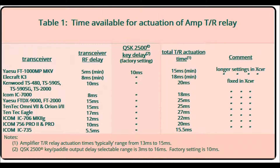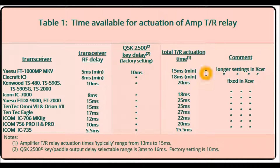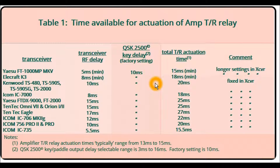The 10 milliseconds for the Kenwood series plus the 10 milliseconds of the QSK 2500 gives you 20 milliseconds for the amplifier TR relay, which is more than enough for any that I'm aware of. You could go as high as 16 milliseconds added to the 10, giving 26 milliseconds, but that does not appear to be necessary. For the Elecraft K3, which has 8 milliseconds minimum, your total time would be around 22 milliseconds. This delay can be adjusted from 3 to 16 milliseconds using jumpers inside the QSK 2500.